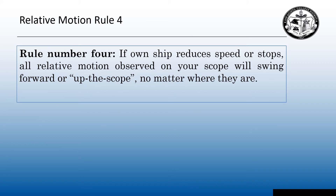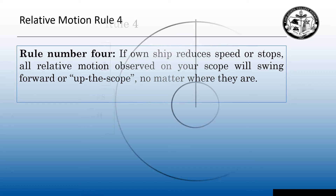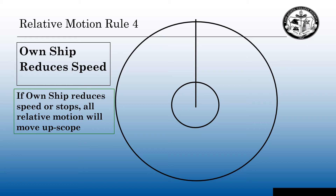Relative motion rule 4 states: if own ship reduces speed or stops, all relative motion observed on your scope will swing forward or upward — relative motion will move up the scope no matter where they are. If own ship reduces speed or stops, all relative motion will move up the scope. So when we slow down, the contact is going to start moving up the scope.